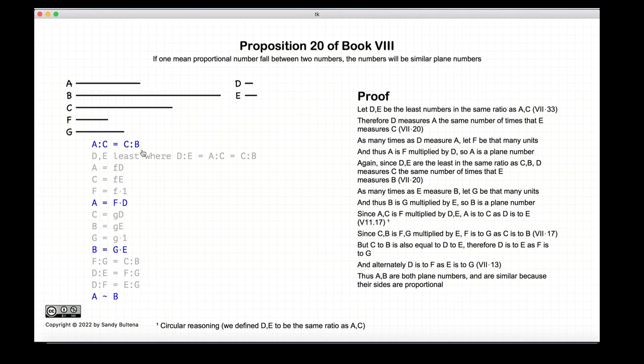If we have three numbers, A to C is equal to C to B, in other words, they're continuously proportional, then A and B are plain numbers and A is proportional to B.